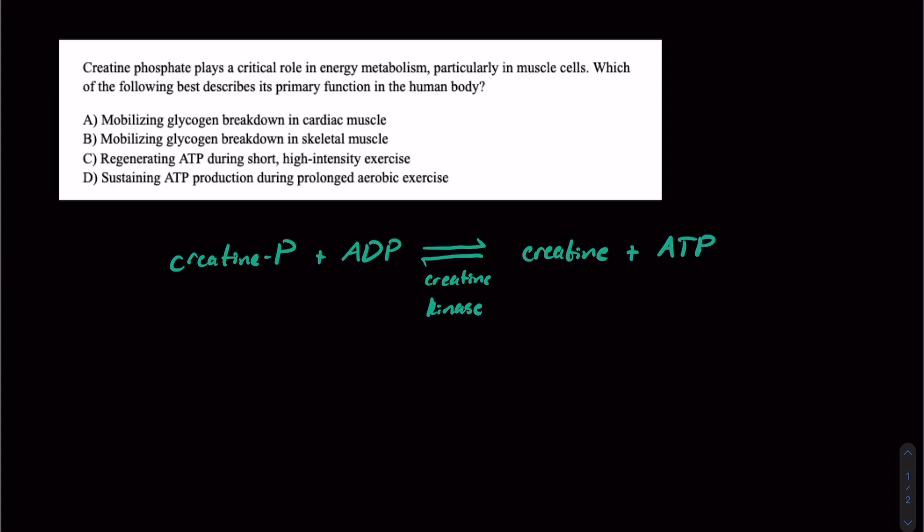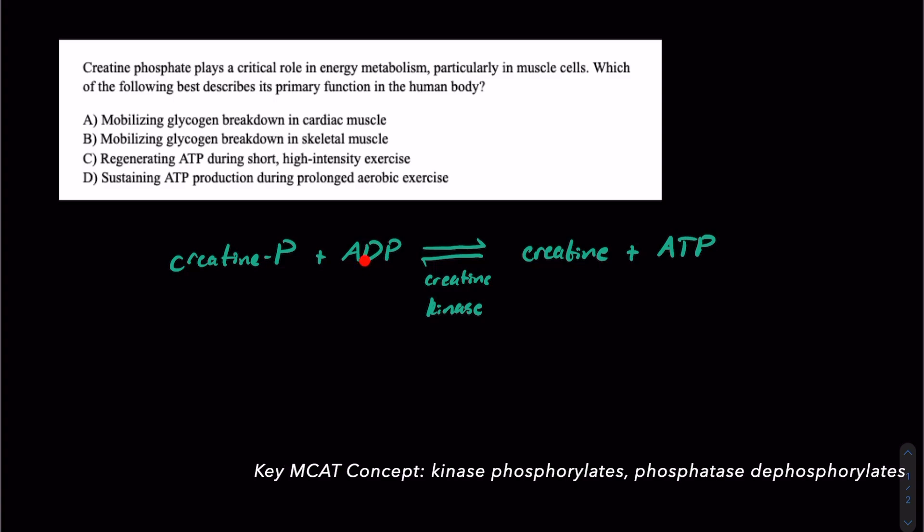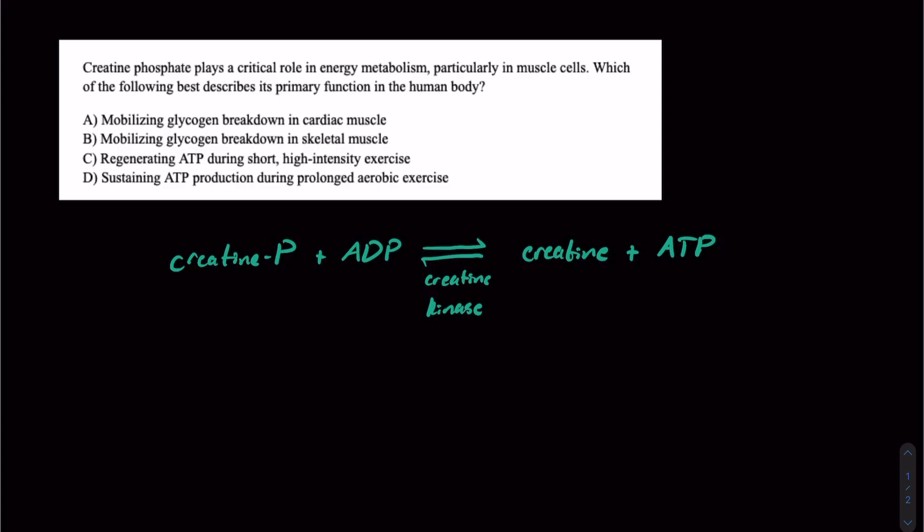So basically creatine kinase is this reversible enzyme, and the kinase is something that's going to phosphorylate something. So basically we're just passing this phosphate back and forth from left to right here. The question is, why do we have this mechanism? Why are we just passing this phosphate back and forth?